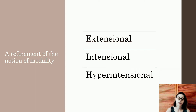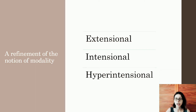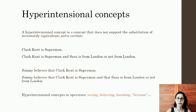We define a context to be hyperintensional if it is not even intensional, which means that if we exchange two sentences which have the same intension or the same extension in a hyperintensional context, these are not equivalent. Therefore, substitution of necessary equivalents does not hold salva veritate in hyperintensional contexts. We can define hyperintensional contexts and concepts as those that do not support substitution of necessary equivalents salva veritate.